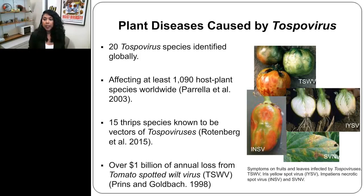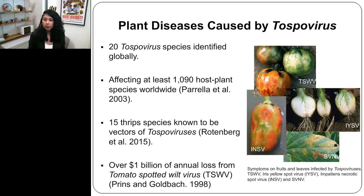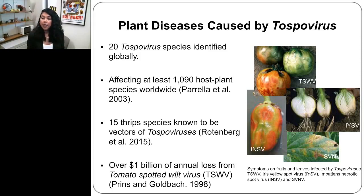Here are some pictures showing symptoms of tomato spotted wilt virus on tomatoes — you can see the spots, actually concentric circles if you look closely. This is impatiens necrotic spot virus in peppers. And this is soybean vein necrosis virus, showing the typical necrosis or dying of tissue along the veins, hence the name soybean vein necrosis virus. This one is iris yellow spot virus.